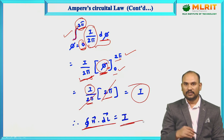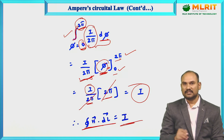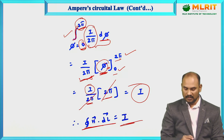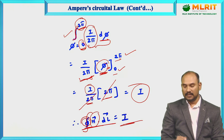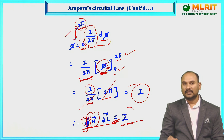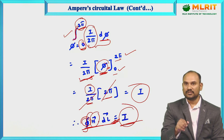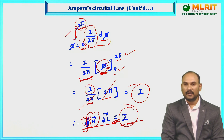So we conclude: ∮ H · dL = I. The integral of the magnetic field around a closed path equals the direct current enclosed within that path. This is Ampere's Circuital Law.